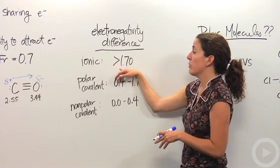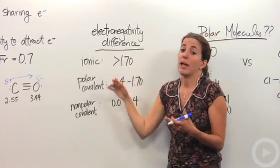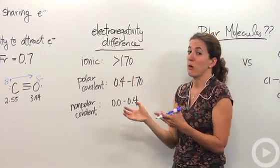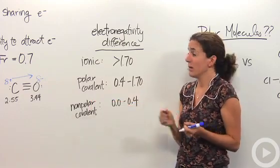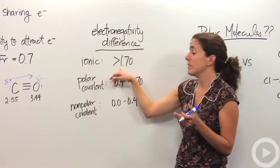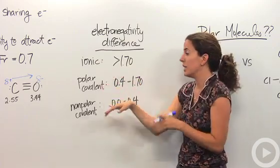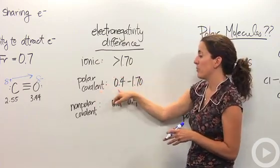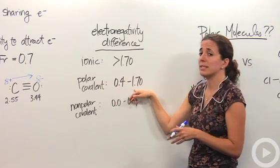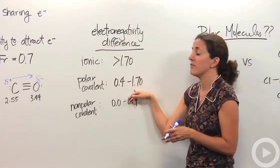If the value is greater than 1.7, it's actually going to be ionic, meaning they're actually not going to share those electrons anymore. One is actually going to take from the other one. So the difference between them is very, very great. So instead of sharing, it's going to transfer. A polar covalent bond is between 0.4 and 1.7, the difference between the two electronegativity values.